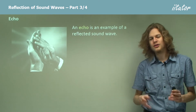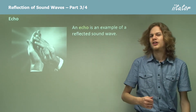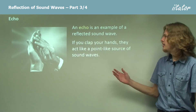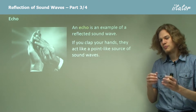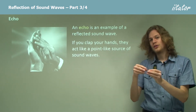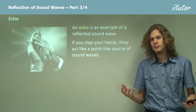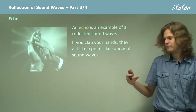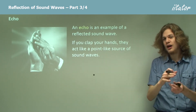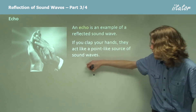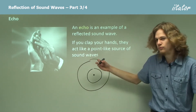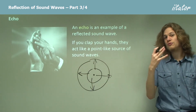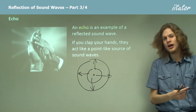An echo is an example of a reflected sound wave. Sound waves are the ones we know the most about at this point. If you clap your hands, you'll get a sound coming from them. This is a source of sound that's very small compared to the room around you, but which spreads out in all directions — a tiny point creating a sound that spreads everywhere. That's why you can hear a clap whether you're in front of, behind, or to the side of the person clapping.